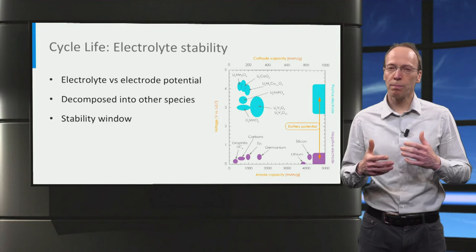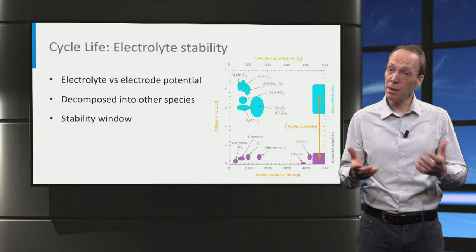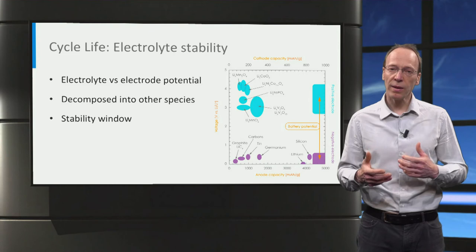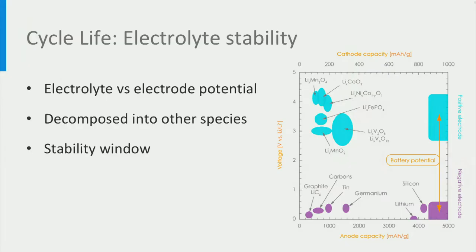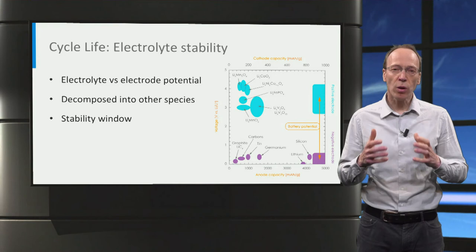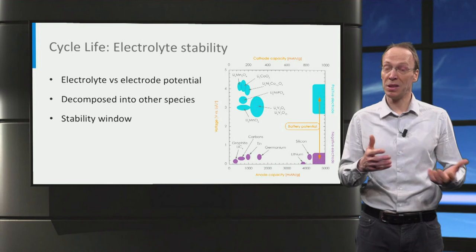Next we consider potential causes of the finite cycle life of batteries — that is, the limited number of times they can be charged and discharged. The electrolyte in a battery is exposed to the reduction and oxidation potentials of the two electrodes. If the electrolyte is oxidized or reduced by these potentials, it is decomposed into other species, which may be insoluble in the electrolyte, often bonding lithium in such a way that it is no longer active. As a consequence, some capacity is irreversibly lost and part of the electrolyte is decomposed, which are major factors causing a finite battery cycle life.